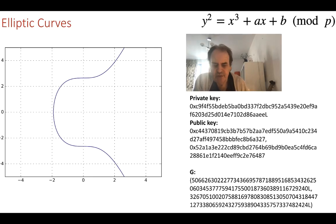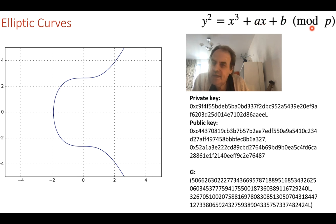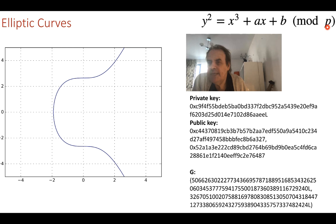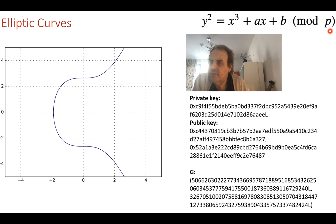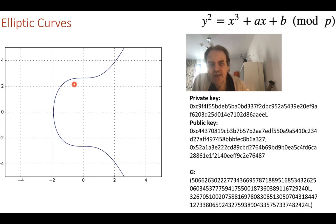The basic formula for our elliptic curve is y squared equals x cubed plus ax plus b, and we have a finite field of mod p, so the values we have are between zero and p minus one. All of our operations are done with respect to mod p. The curve itself looks analog without bringing in the mod p part.